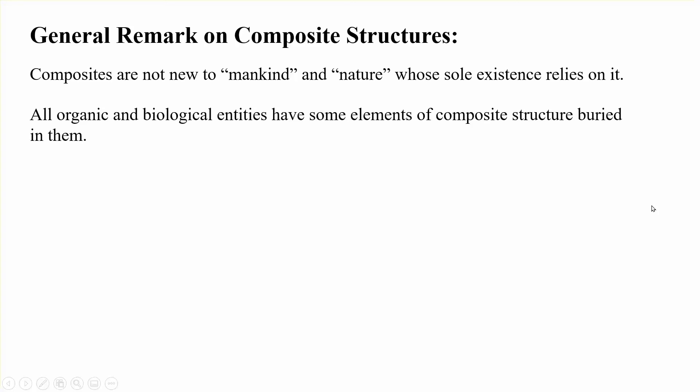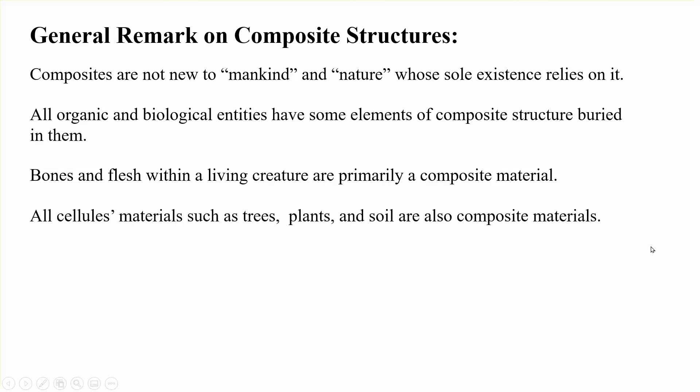All organic and biological entities have some elements of composite structure buried in them. For example, cartilage and flesh in living creatures are mainly composite material, and cellulose materials such as trees, plants, and soil are also composite material, although soil is not cellulose.